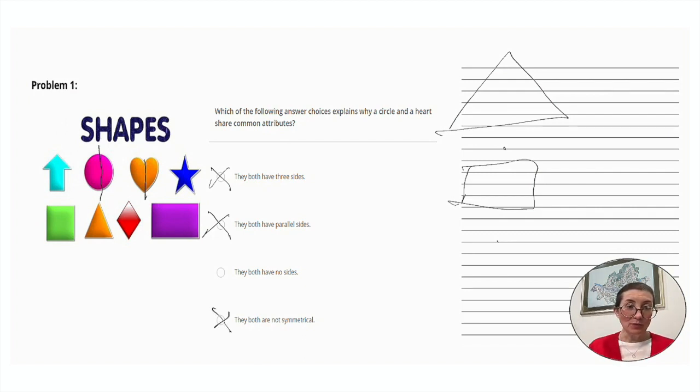Now our last one. They both have no sides. This is correct. They are both closed curves. So there are no sides.